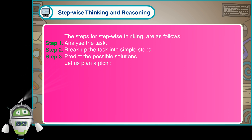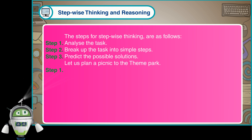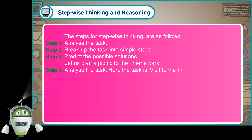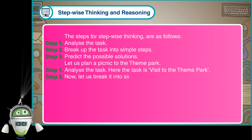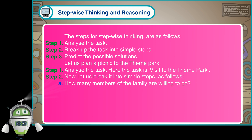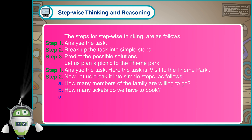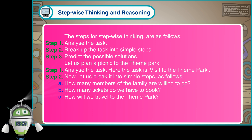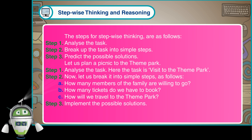Let us plan a picnic to the theme park. Step 1: Analyze the task. Here the task is a visit to the theme park. Step 2: Now let us break it into simple steps. A) How many members of the family are willing to go? B) How many tickets do we have to book? C) How will we travel to the theme park? Step 3: Implement the possible solutions.